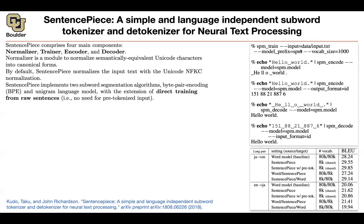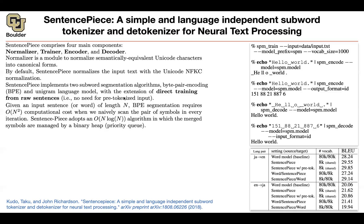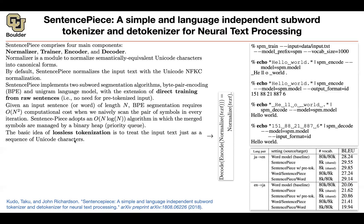One cool feature of SentencePiece is that you can work directly with raw sentences — no pre-tokenization step is needed. When we did BPE before, we created a dictionary with a histogram of word frequencies and then merged characters from that. With SentencePiece, that pre-tokenization step is eliminated. Also, the BPE implementation in SentencePiece is smart: naive BPE is O(n²), but this implementation reduces it to O(n log n) using appropriate data structures like binary heaps.